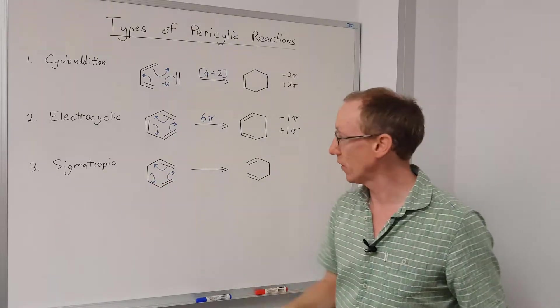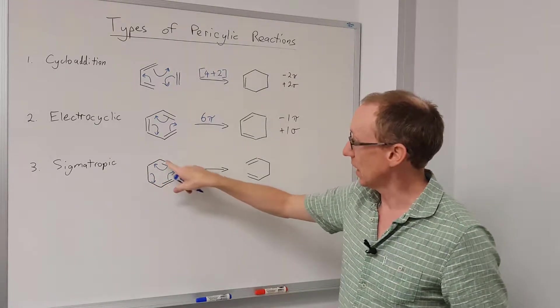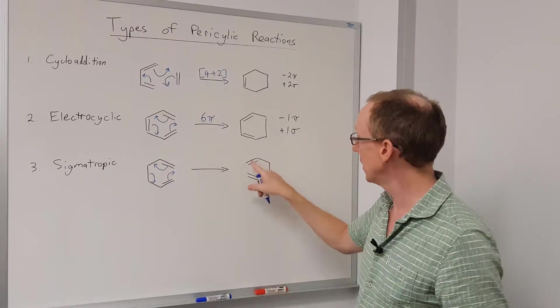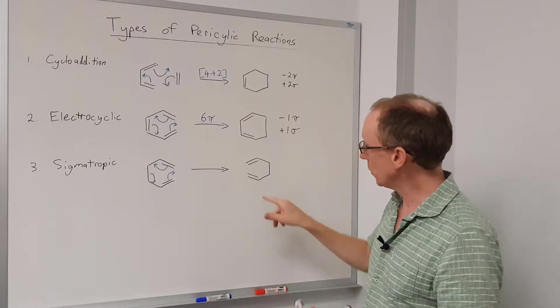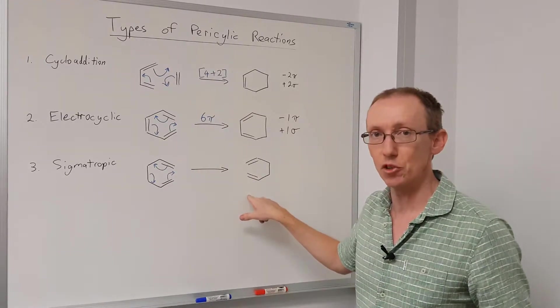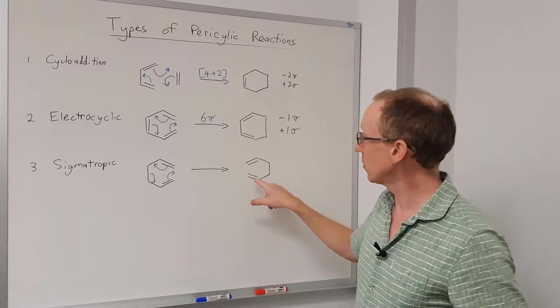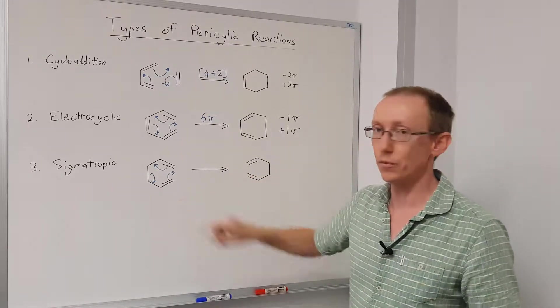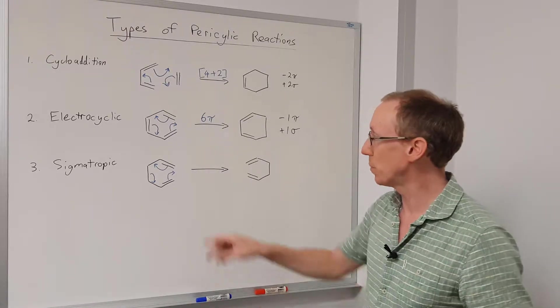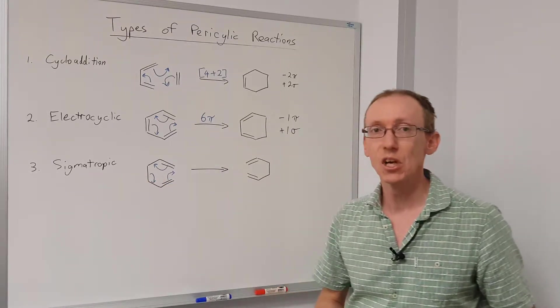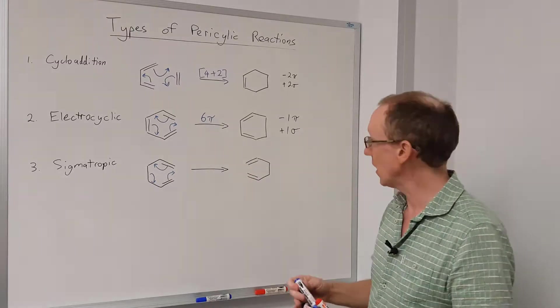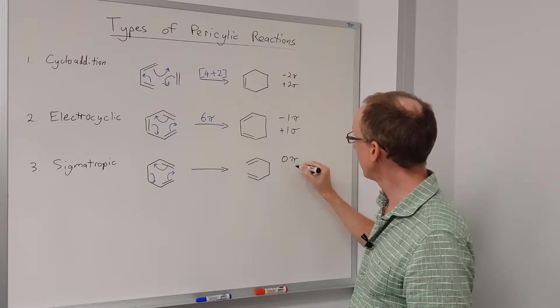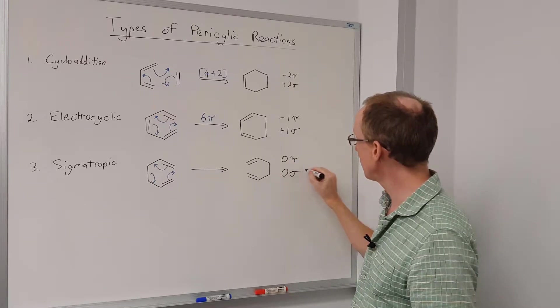Back to the sigmatropic rearrangement, we've got this cyclic transition state, these six electrons all moving around to make the product. Now if you look at this, the simplest case of this particular sigmatropic rearrangement, we've actually got exactly the same structure as the product as we've got for the starting material. That won't always be the case, but the sigmatropic rearrangements, we do have a situation where in net terms, we get zero change in pi bonds and zero change in sigma bonds.